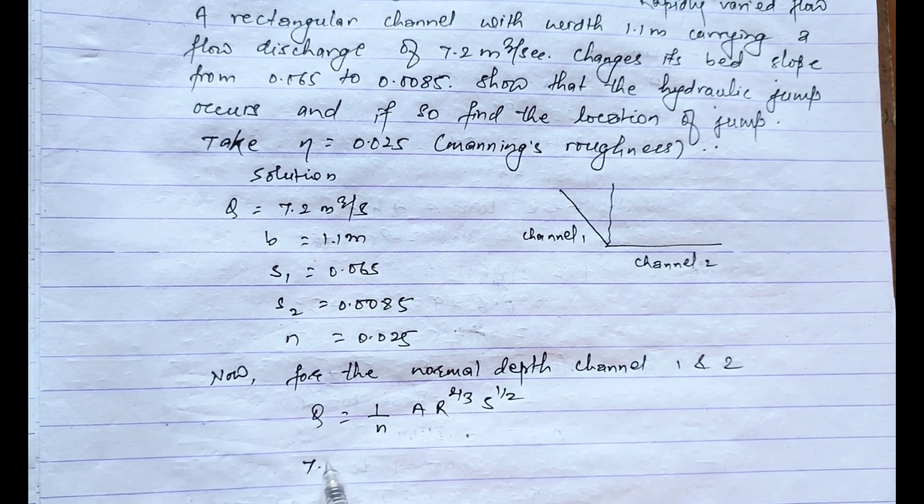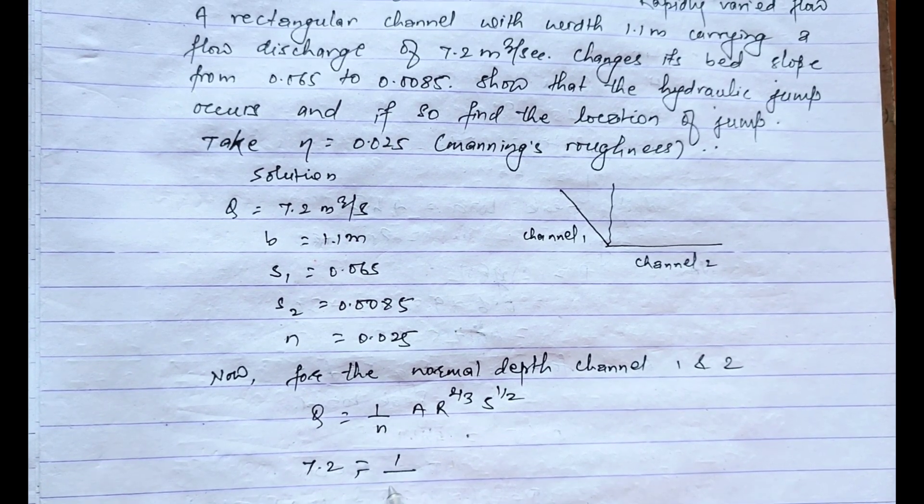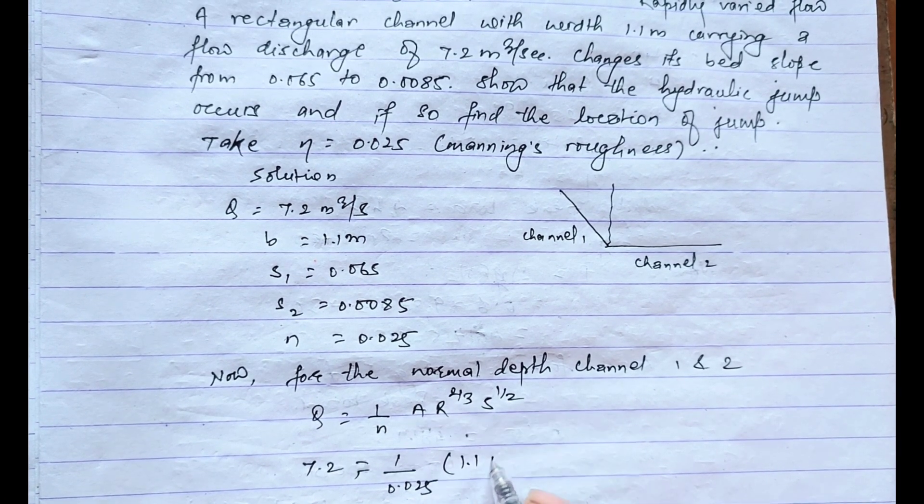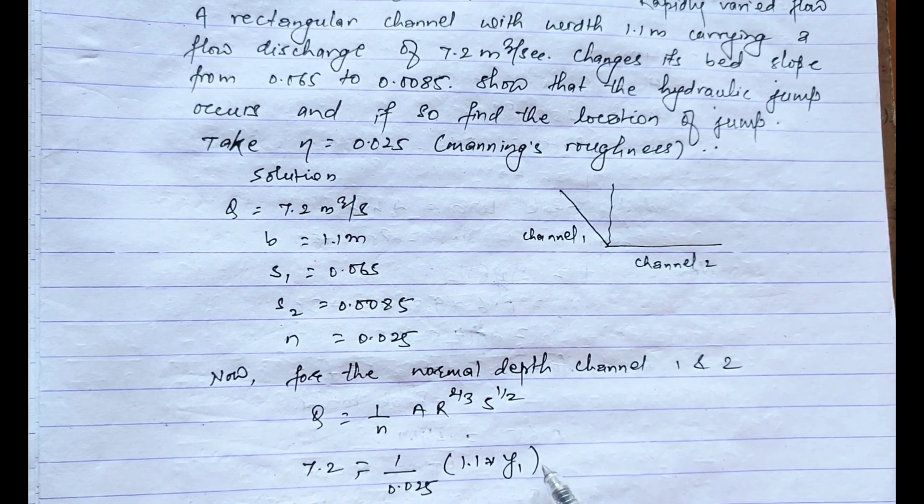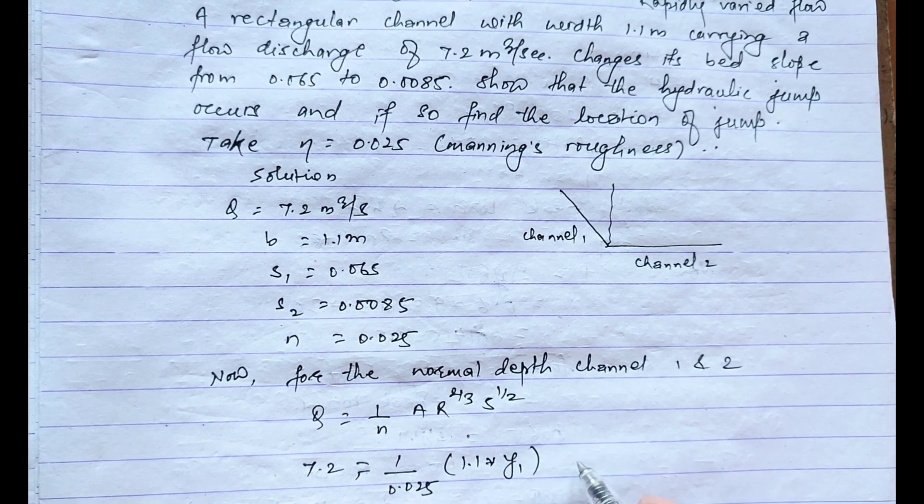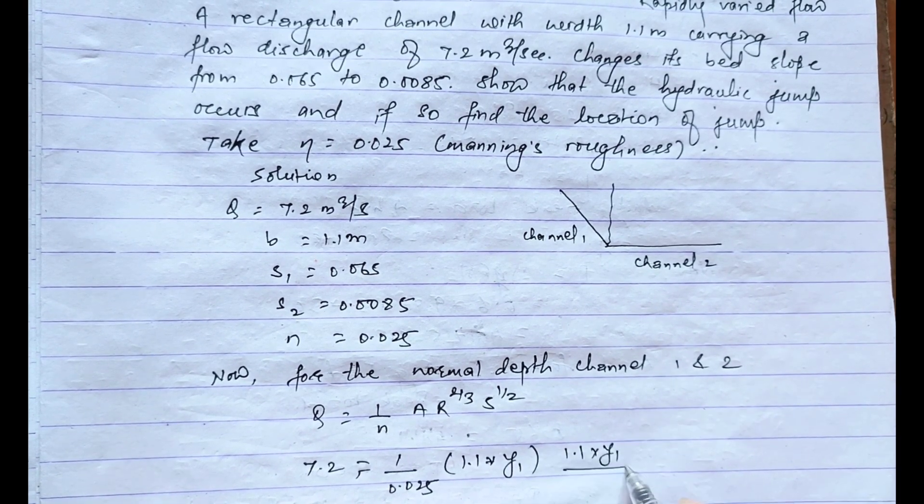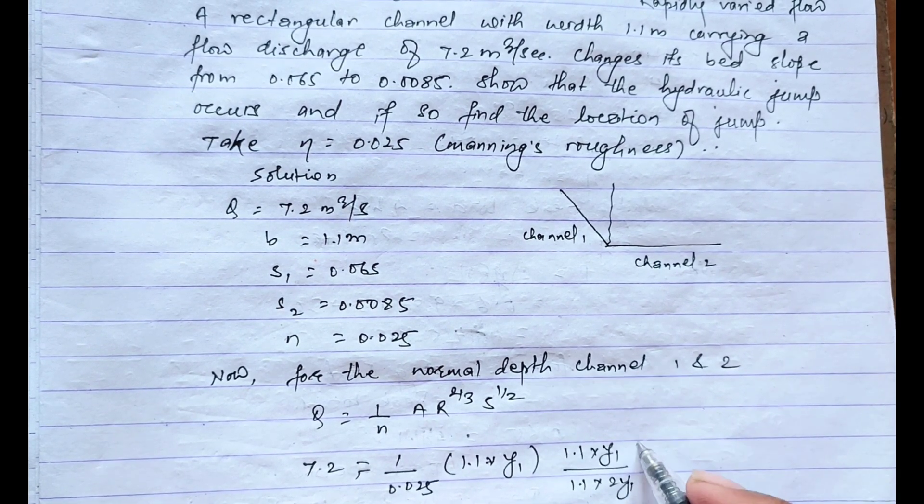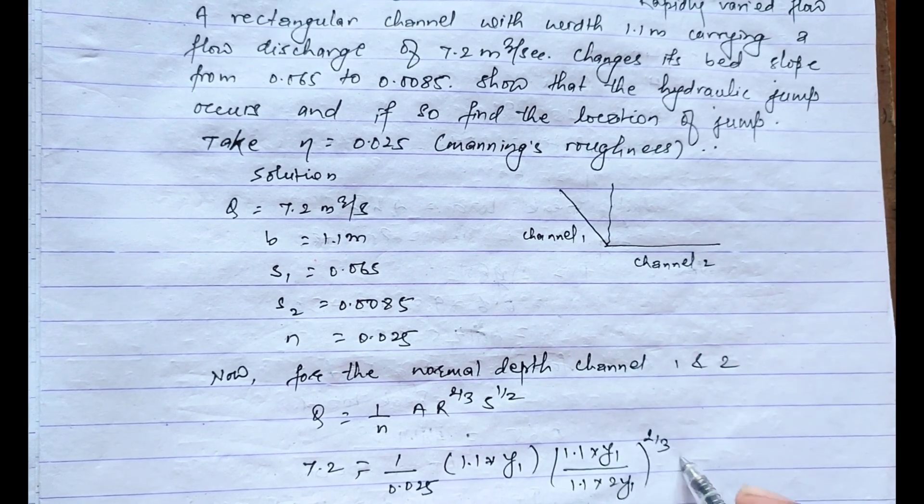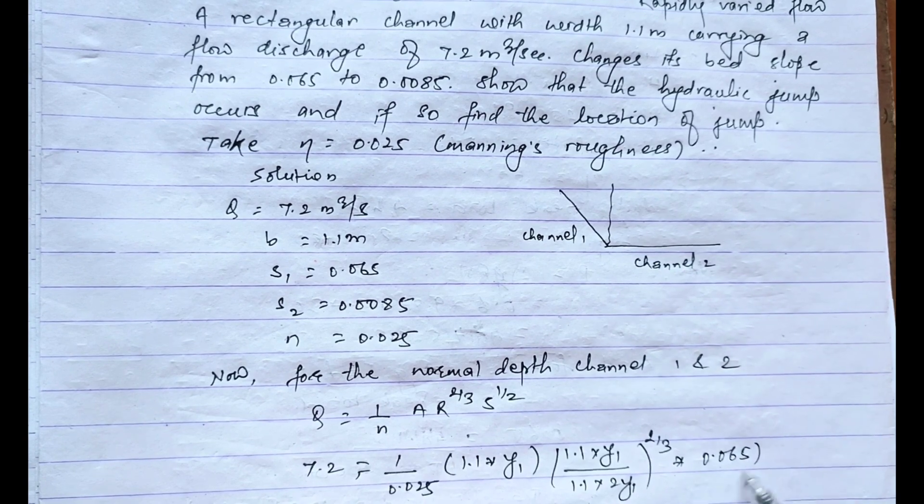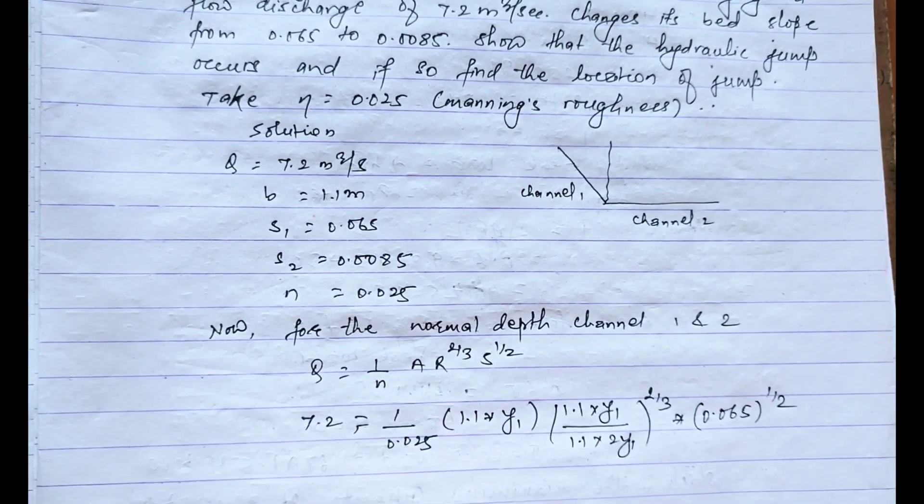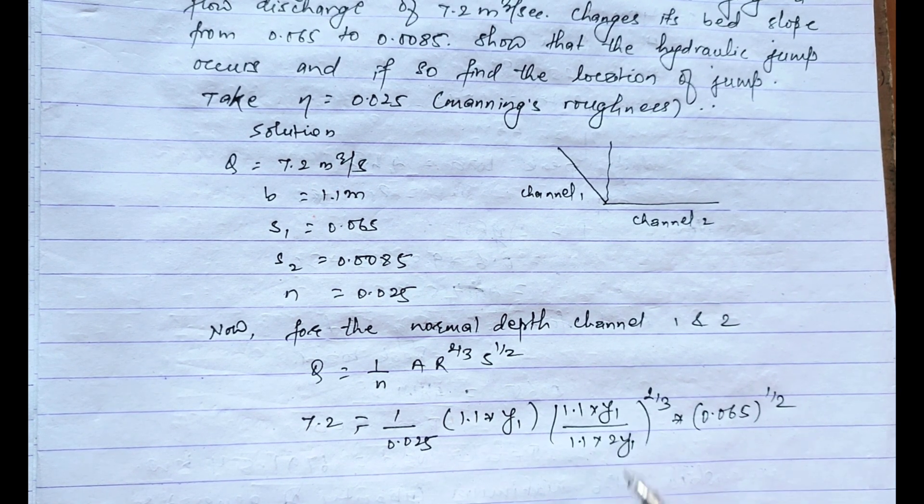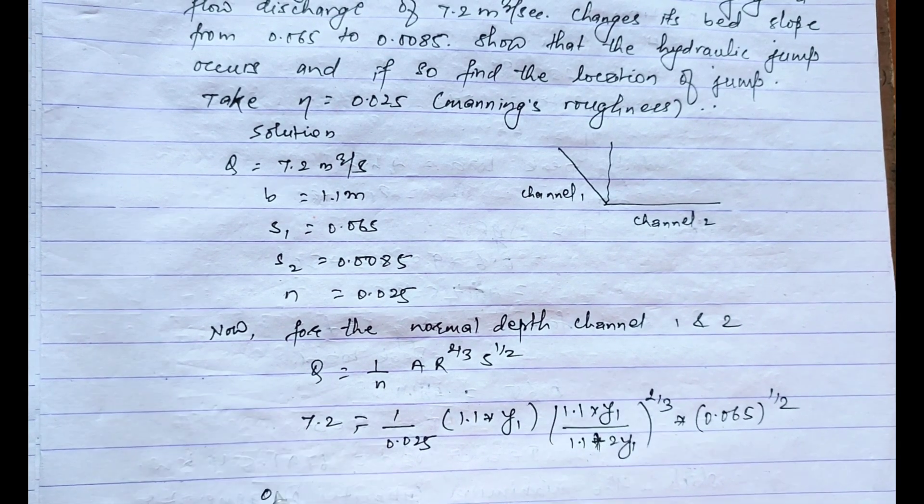Now for the normal depth at channel 1 and 2, that is Q equals 1 by n times A times R power 2 by 3 times S power 1 by 2. That is the discharge formula. Placing the value of Q is 7.2 equals n is 0.025 times area which is 1.1 times y1. This is for channel 1, and R means A by P where the power is 1.1 into S naught is 0.065 power 1 by 2. Here we have placed the value of B and y, B by B plus 2y.